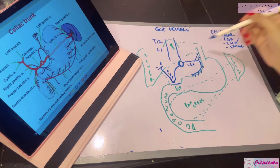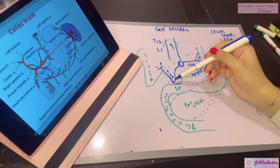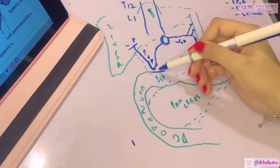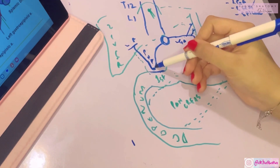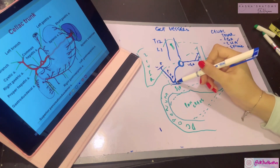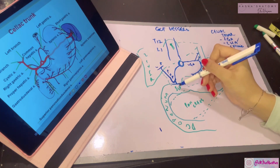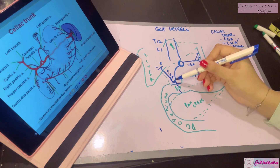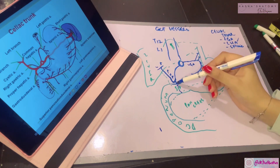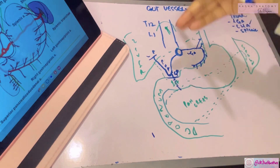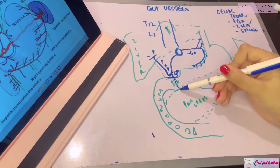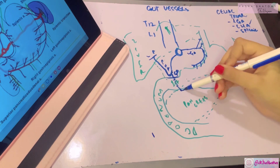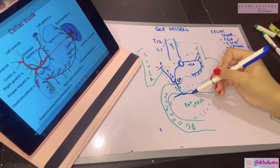The continuation of the common hepatic artery is the proper hepatic artery, arising at the upper border of the first part of the duodenum. The common hepatic artery also gives the gastroduodenal artery at this point — an important relation, as it runs posterior to the first part of the duodenum. When it reaches the lower border, it divides into its two terminal branches.